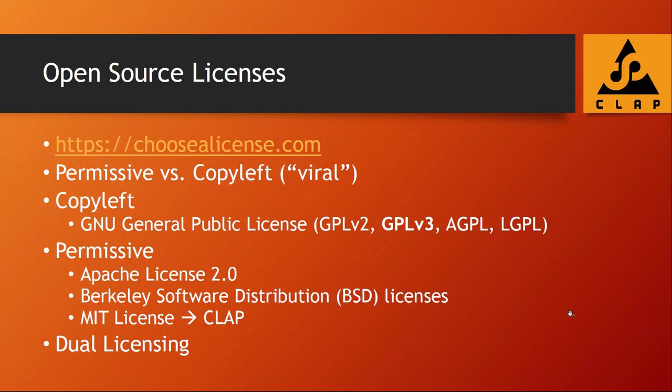The more permissive licenses allow you to use them in a commercial product without sharing your code. For example, the Apache License — most famously known for the Apache web server or the Tomcat server if you run Java on the back end. There are also different variations of the BSD License — the Berkeley Software Distribution license — which is also very permissive. And the one that CLAP uses: the MIT License. These basically say: don't bother us with anything; as long as you keep our copyright notice, you're good to do whatever you want.